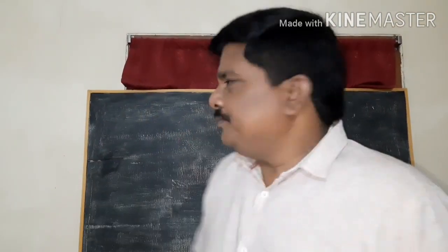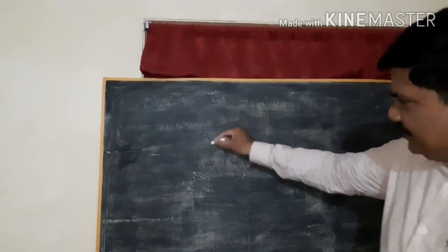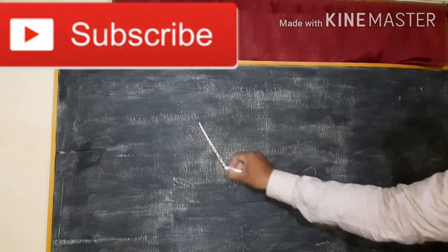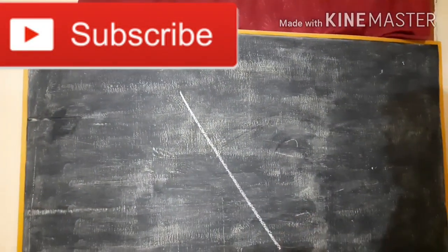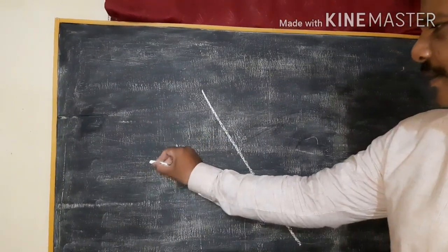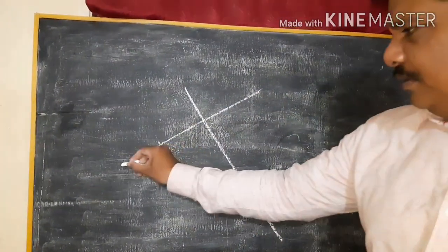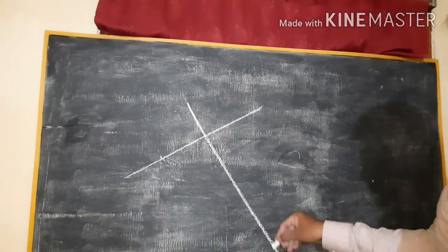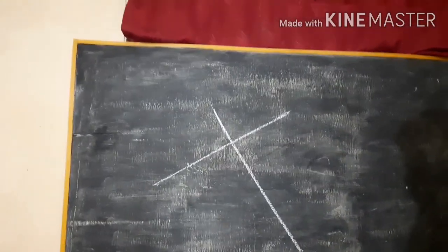First of all, we have to draw a slant line like this. First you have to draw a slant line like this, and then you have to draw the next slant line like this. Just draw first one slant line, then a slant line like this.